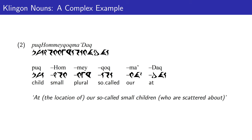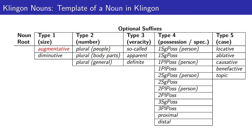Let's now look at another complex example. Here is another Klingon noun that consists of a noun root followed by a type 1 suffix, a type 2 suffix, a type 3 suffix, a type 4 suffix, and a type 5 suffix. We will come back to this example at the end of the lecture. For the remaining bulk of this lecture, we will go through the suffixes one by one, presenting an example of each type of suffix.